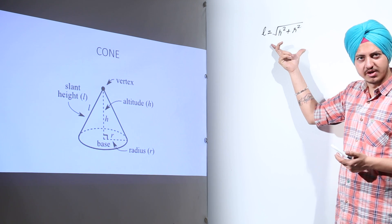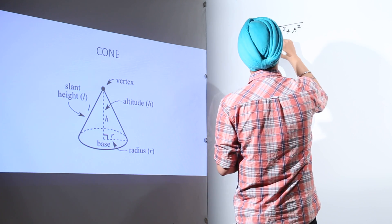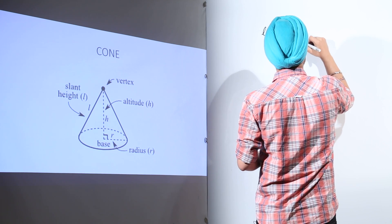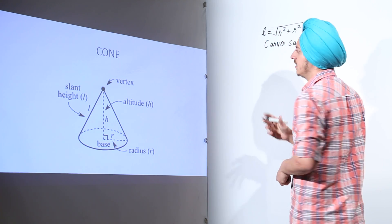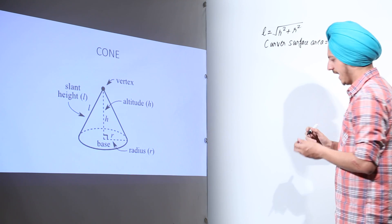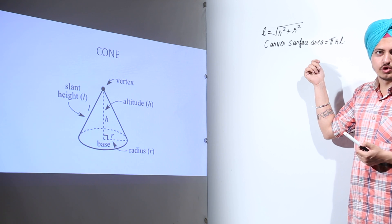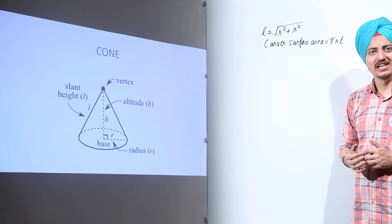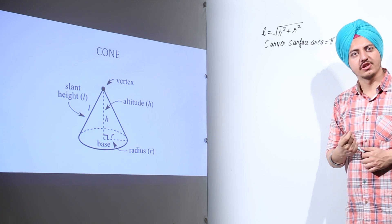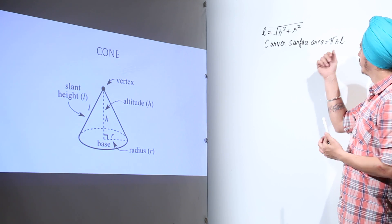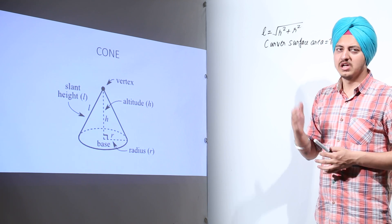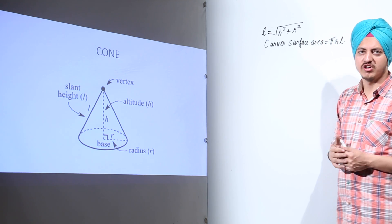Now we move on to the curved surface area of the cone. The curved surface area is equal to π R L, where π is 22/7 or 3.14, R is the radius, and L is the slant height. L can also be replaced by the square root of H squared plus R squared. So if you know the radius and the slant height or the altitude, you can always find the curved surface area of a cone.